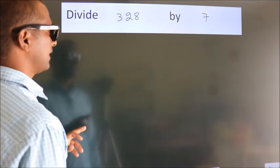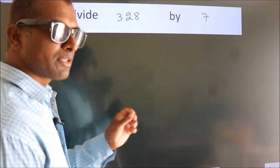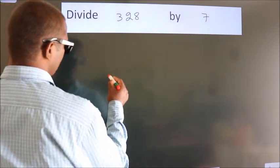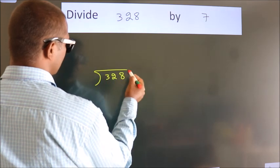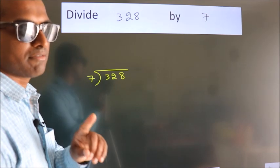Divide 328 by 7. To do this division, we should frame it in this way: 328 here, 7 here. This is your step 1.